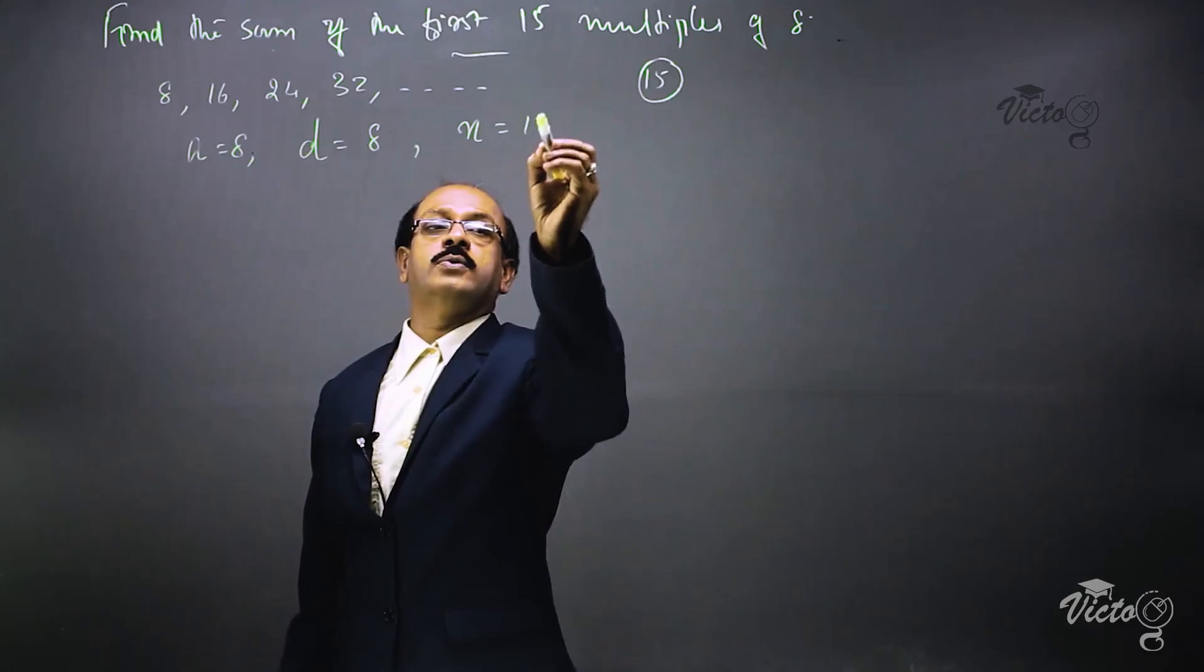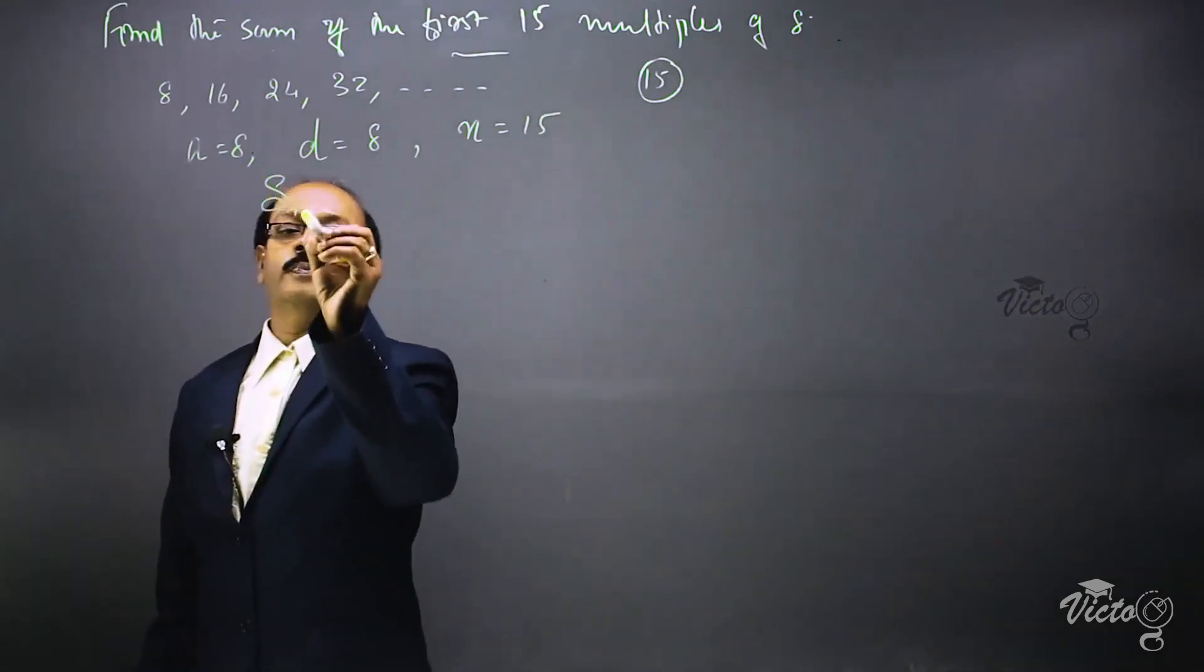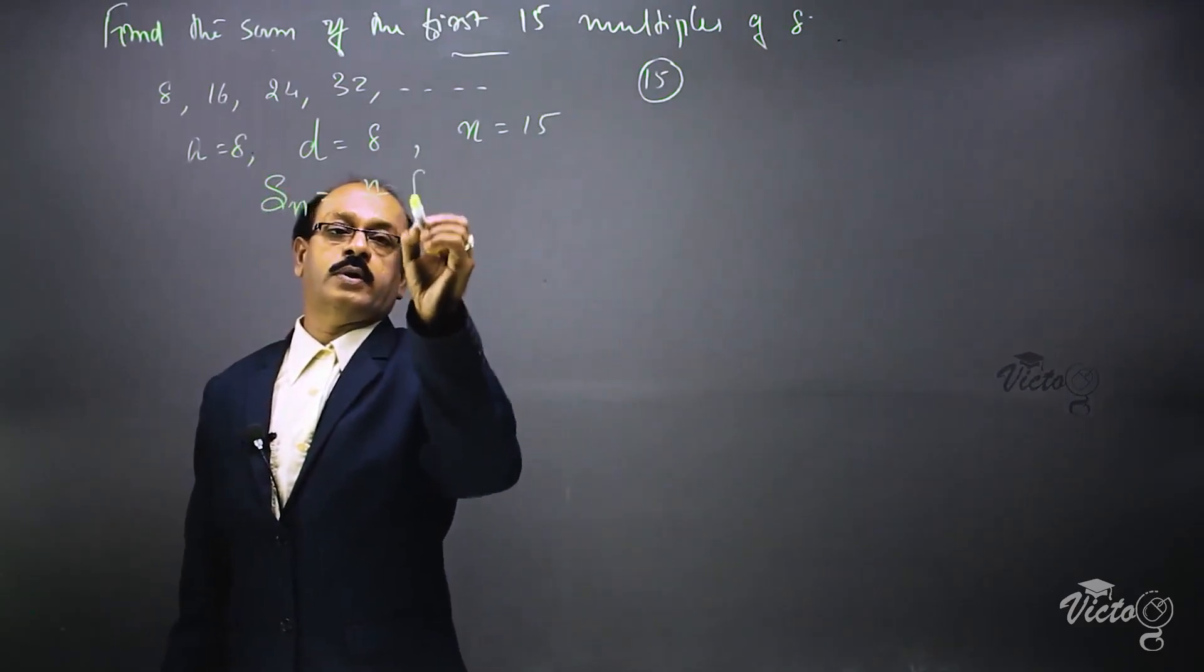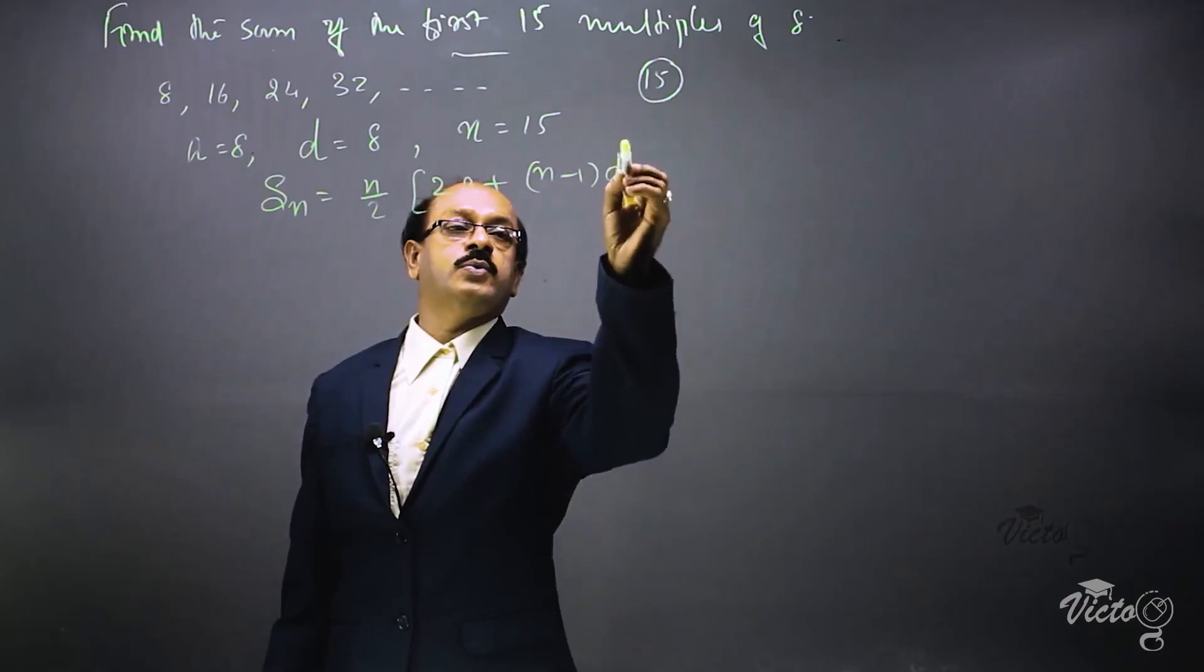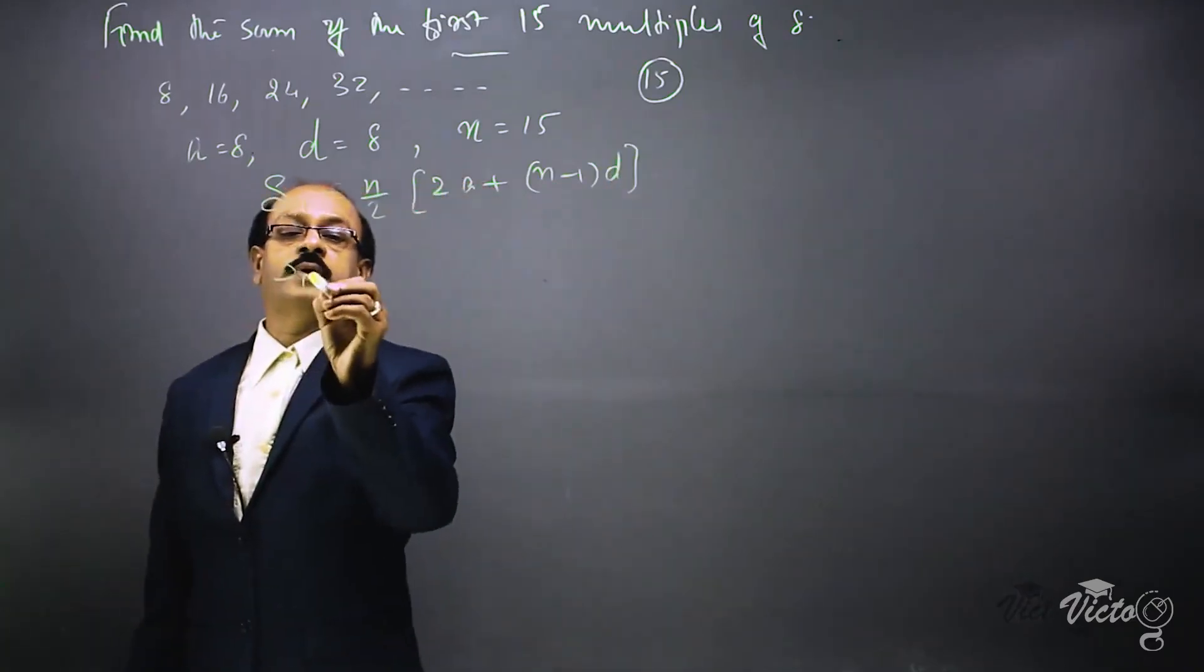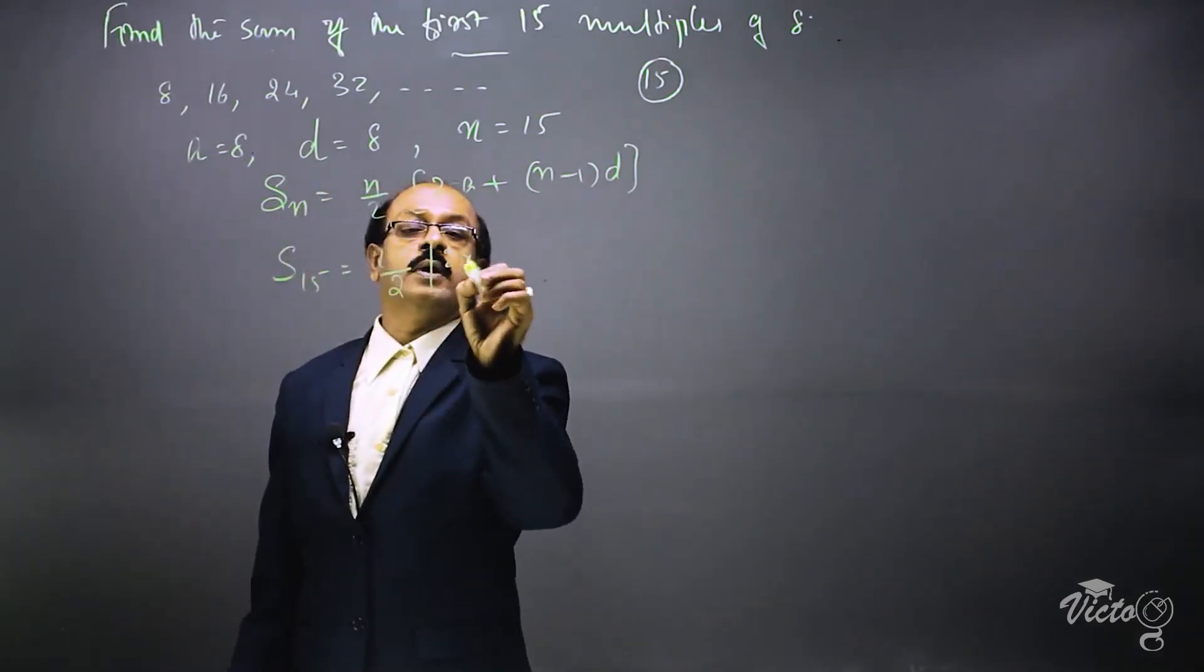Use the formula for finding the sum: S_n is equal to n by 2 into 2a plus (n minus 1) into d. S_15 is equal to 15 by 2 into 2 into 8 plus (15 minus 1) into common difference which is also 8.